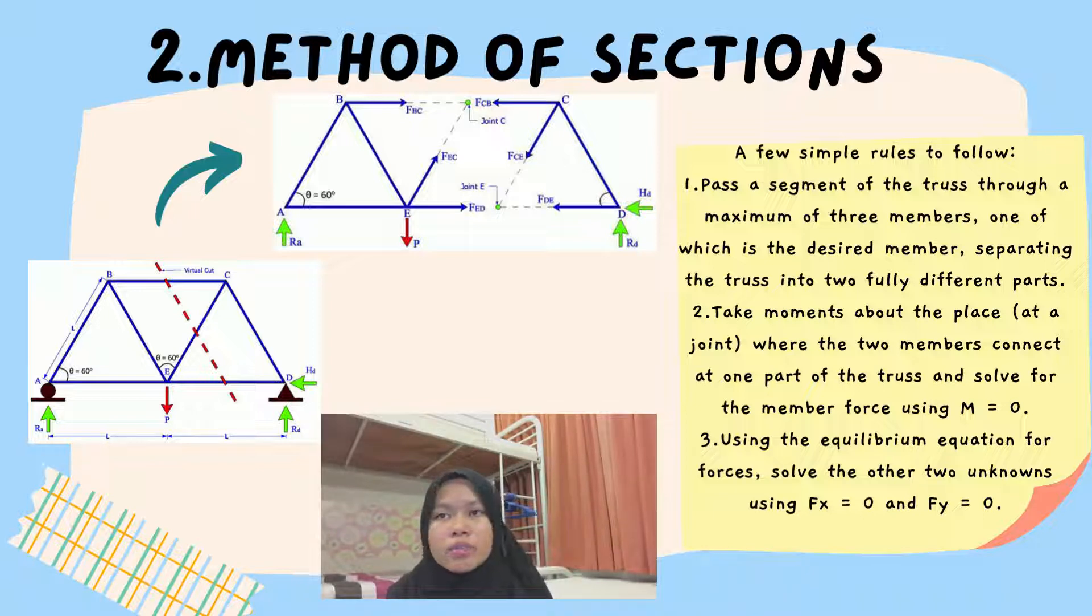The example will be the same as the previous figure with the same simplified truss model. Unlike the joint technique, we can solely concentrate on determining the force values for members BC, DE, and ED. A few simple rules to follow: First, pass a segment of the truss through a maximum of three members, one of which is the desired member, separating the truss into two fully different parts. Second, take moments about the point at the joint where two members connect at one part of the truss and solve for the member force using M equals zero. Then, using the equilibrium equations for forces, solve the other two unknowns using Fx equals zero and Fy equals zero.